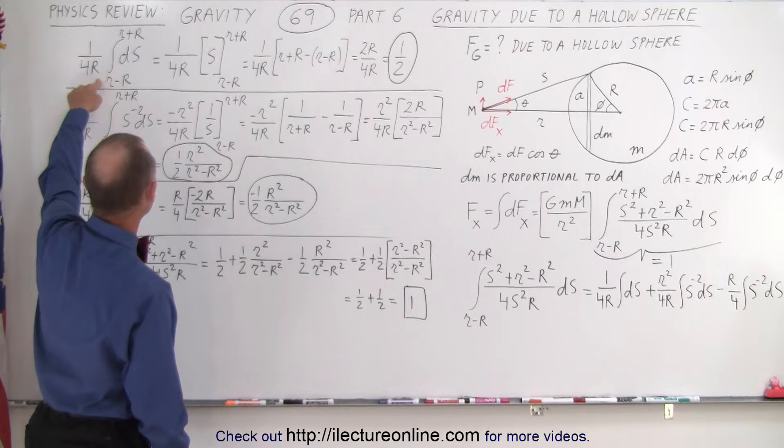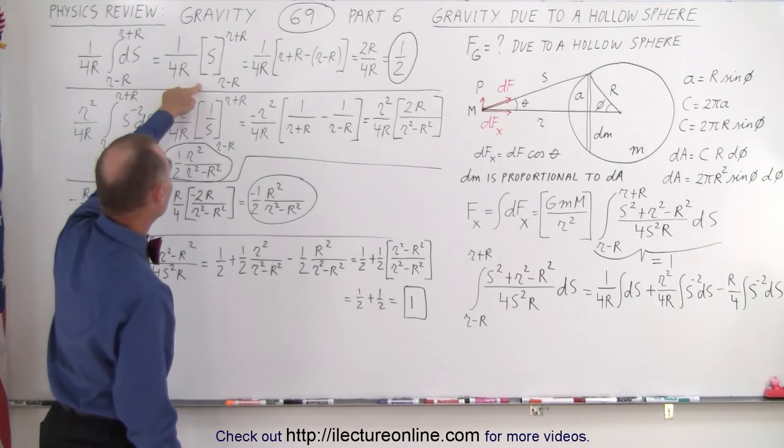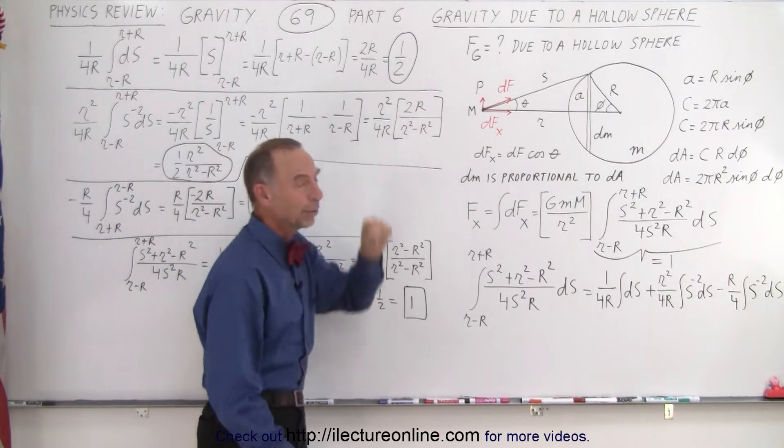The first one is pretty straightforward. So the integral of the s is s, we plug in the limits, and we end up with 1 half.